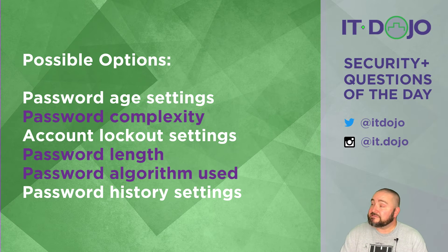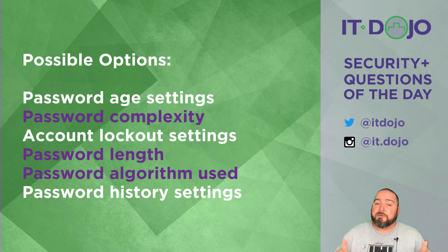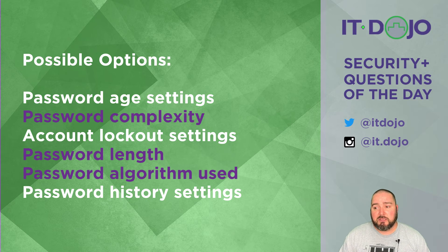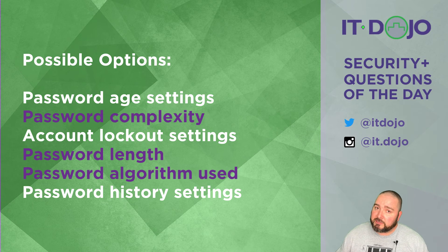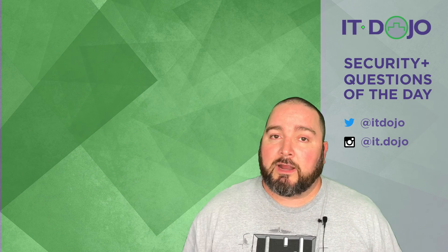The last item: password history settings — not allowing people to reuse the same password is definitely a smart play, but it doesn't have anything to do with this question. The question is about how long or how hard it will be for somebody to brute force a password hash. The fact that they haven't been able to reuse the same password for the past 24 passwords has nothing to do with how long it takes to brute force it. To sum it up, the best choices from this question are password complexity, password length, and the algorithm used.